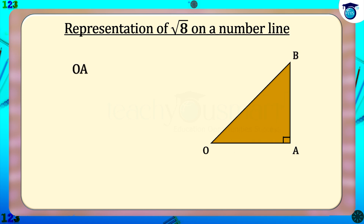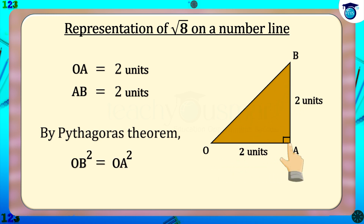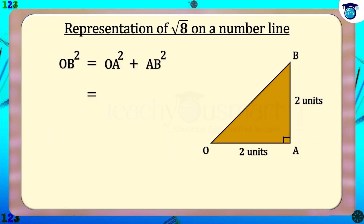Now let us prove this result by Pythagoras' theorem. If OA = 2 units and AB = 2 units, then by Pythagoras' theorem: OB² = OA² + AB² = 2² + 2² = 4 + 4 = 8. Therefore OB = √8 units.